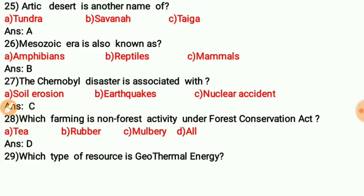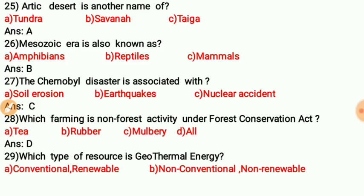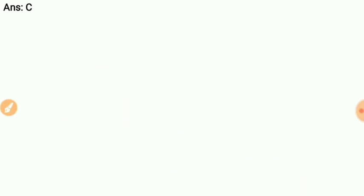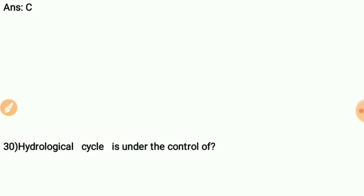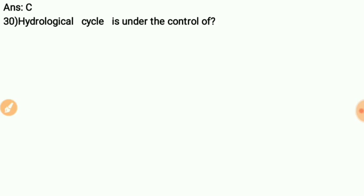Question twenty-eight: What type of resource is geothermal energy? The correct answer is C — non-conventional and renewable. Question twenty-nine: The hydrological cycle is under the control of — the correct answer is B — forest.